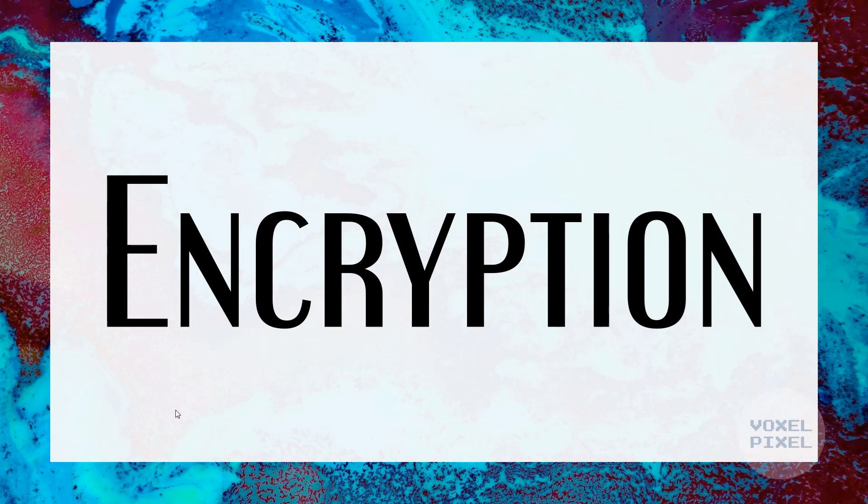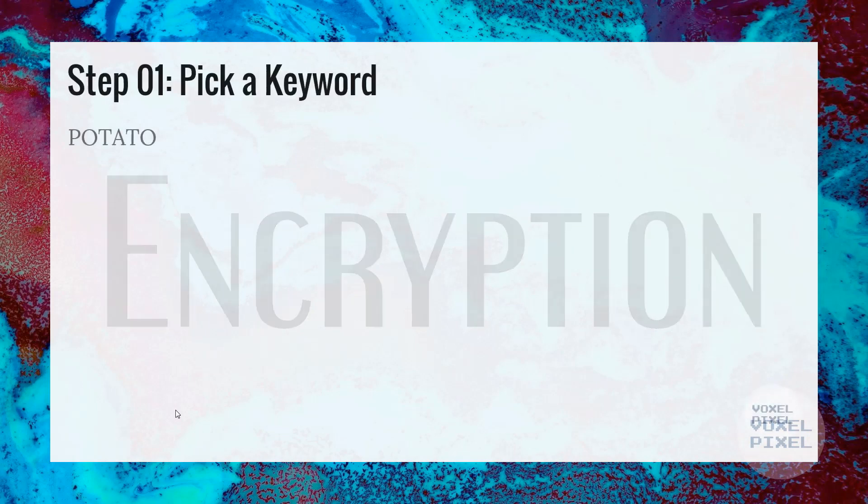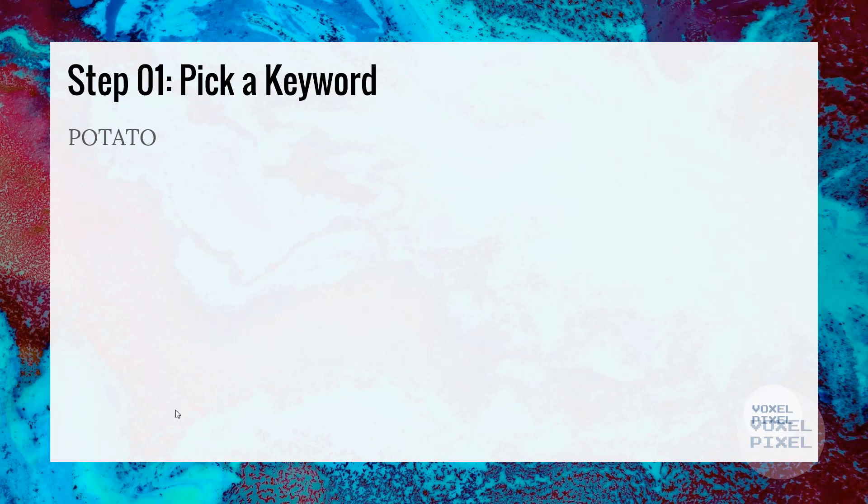Let's look at encryption first. For this tutorial, let's pick a keyword potato. Next, we will arrange our keyword's individual characters into columns. Each column will have an individual character of the keyword. First is the P, then comes O, then T, then A, then T, then last character O.